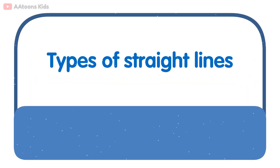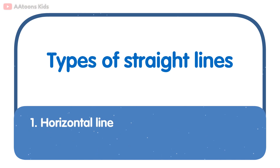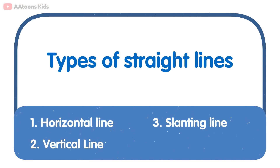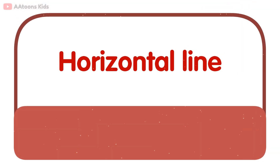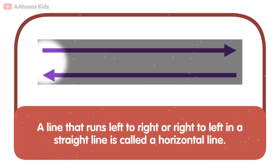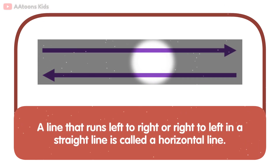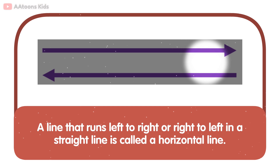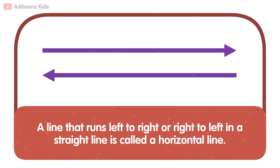Types of Straight Lines: Horizontal Line, Vertical Line, Slanting Line. A line that runs left to right or right to left in a straight line is called a horizontal line.